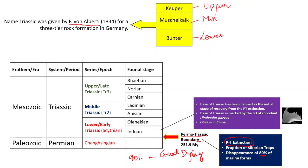The Siberian traps, the Siberian lava flows, were formed at this Permo-Triassic boundary. The last stage of the Permian period was the Changhsingian, and the earliest epoch of the Triassic — the lower Triassic — is separated from the Changhsingian by this Permo-Triassic event. The early Triassic stage was earlier known as the Scythian, which was later divided into the Induan and Olenekian.